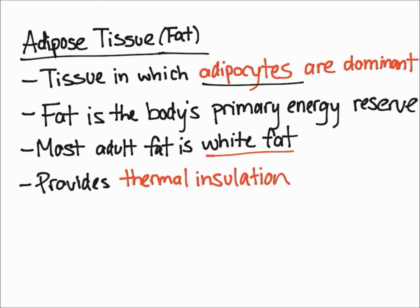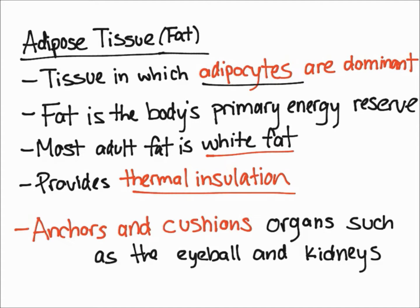Another function of fat — probably the one we most commonly think of — is that it provides thermal insulation, which helps you regulate your temperature and keep your body warm. Finally, fat also anchors and cushions organs such as your eyeballs and your kidneys.